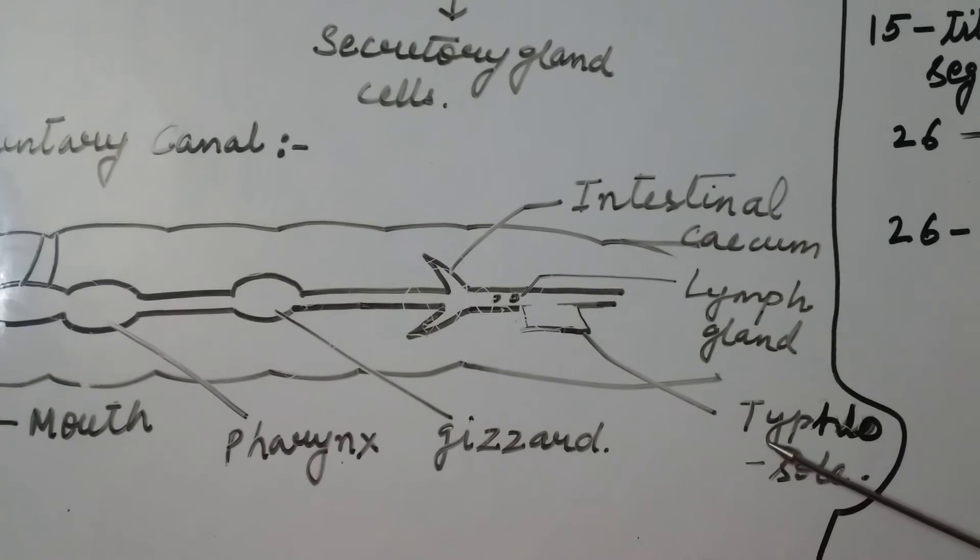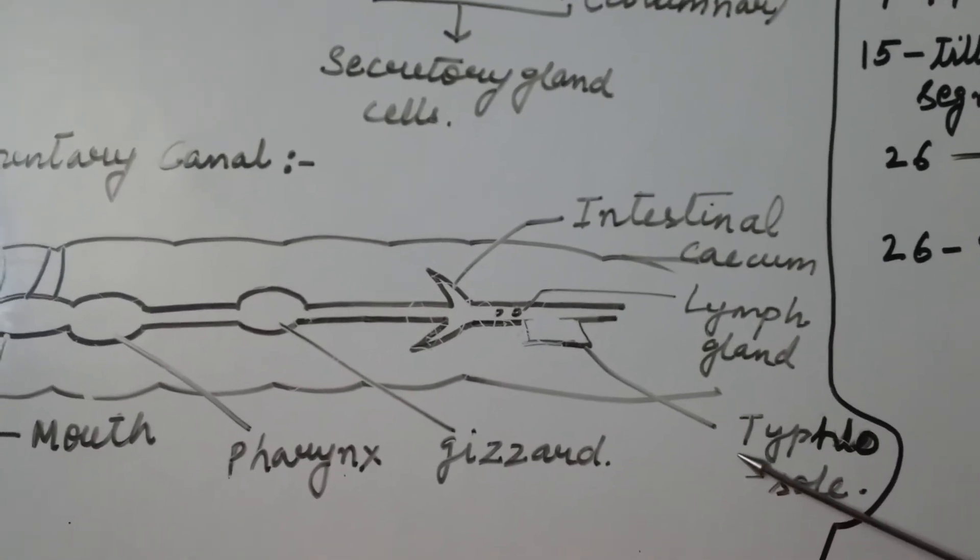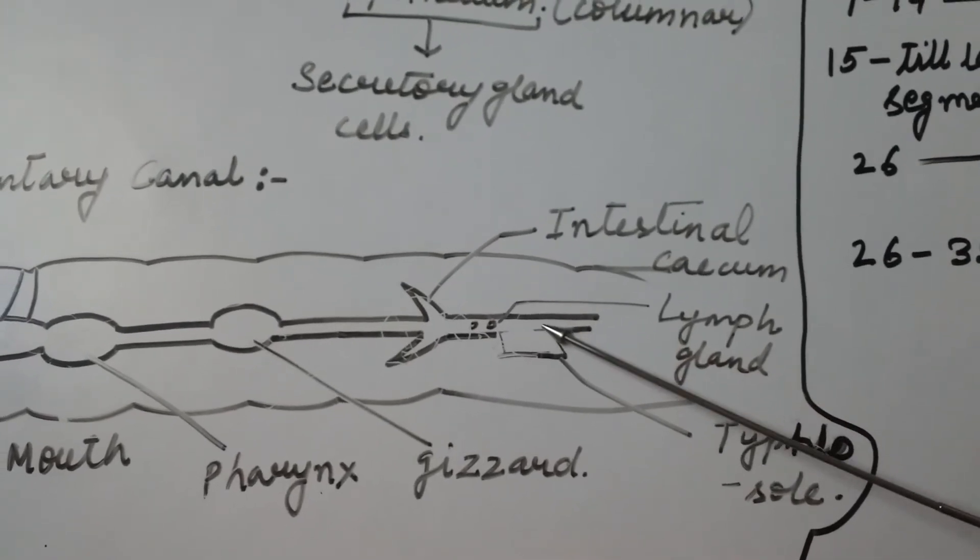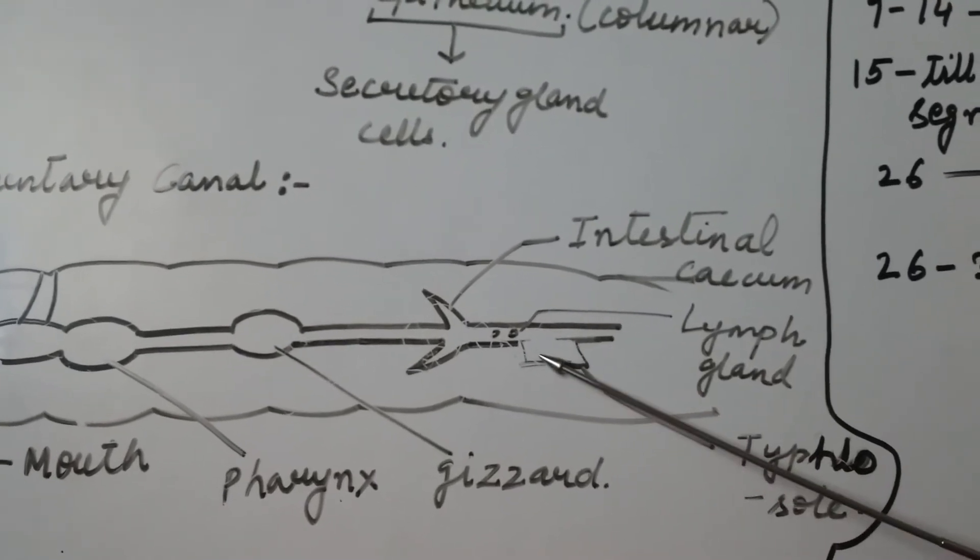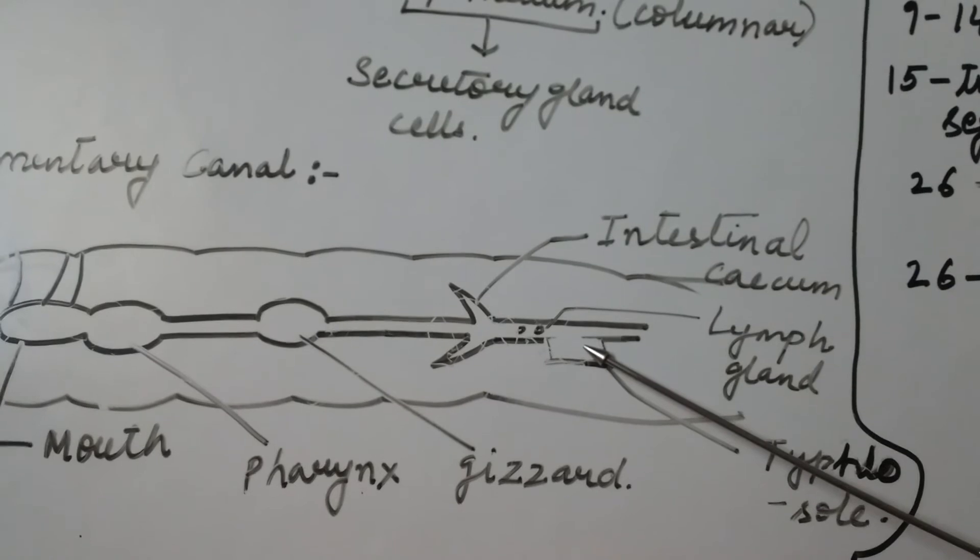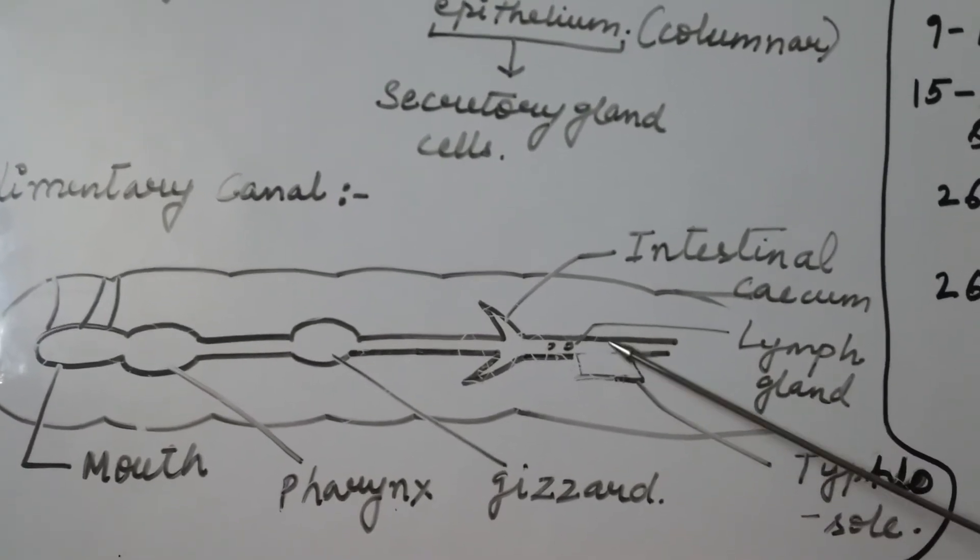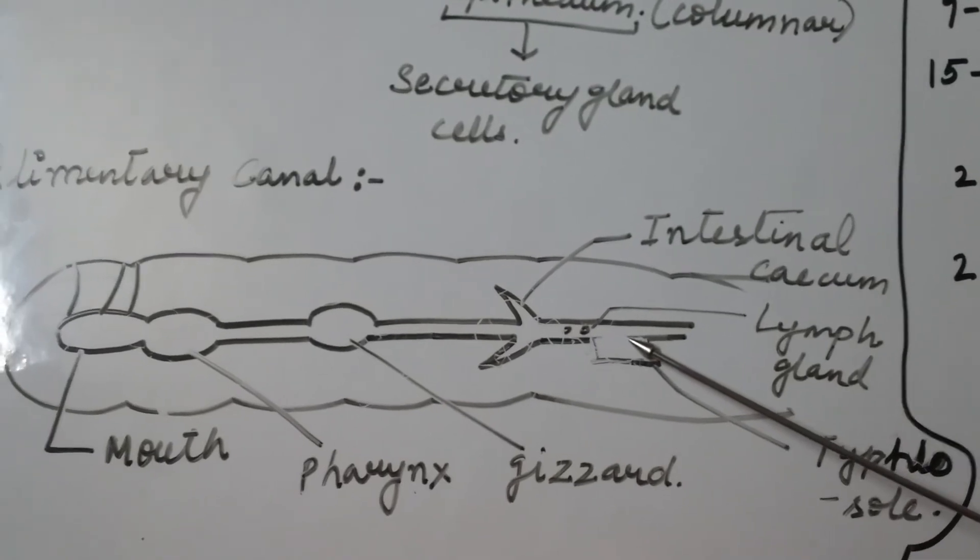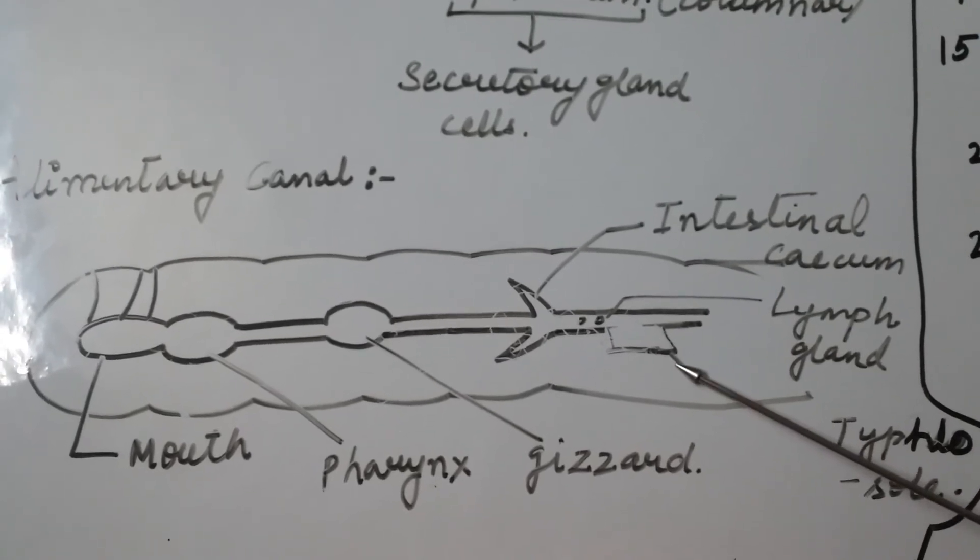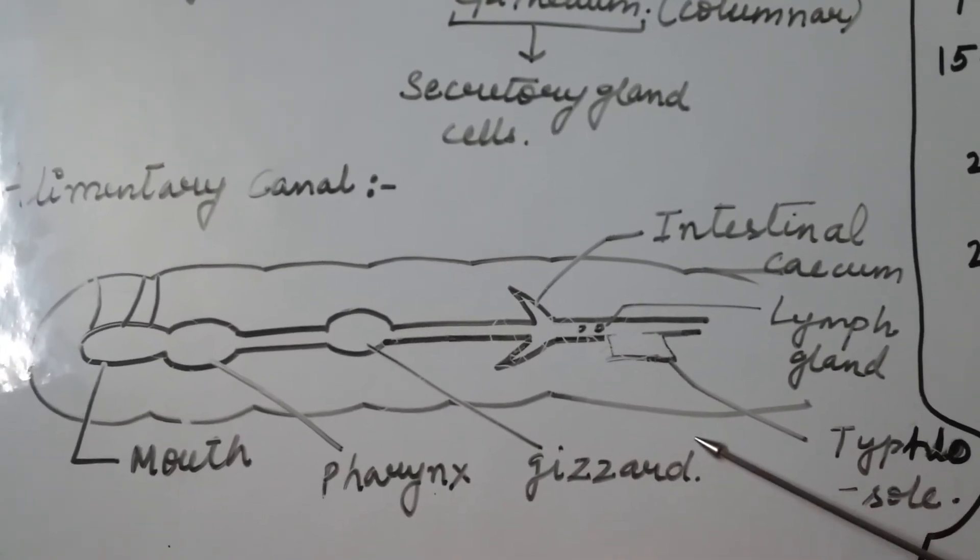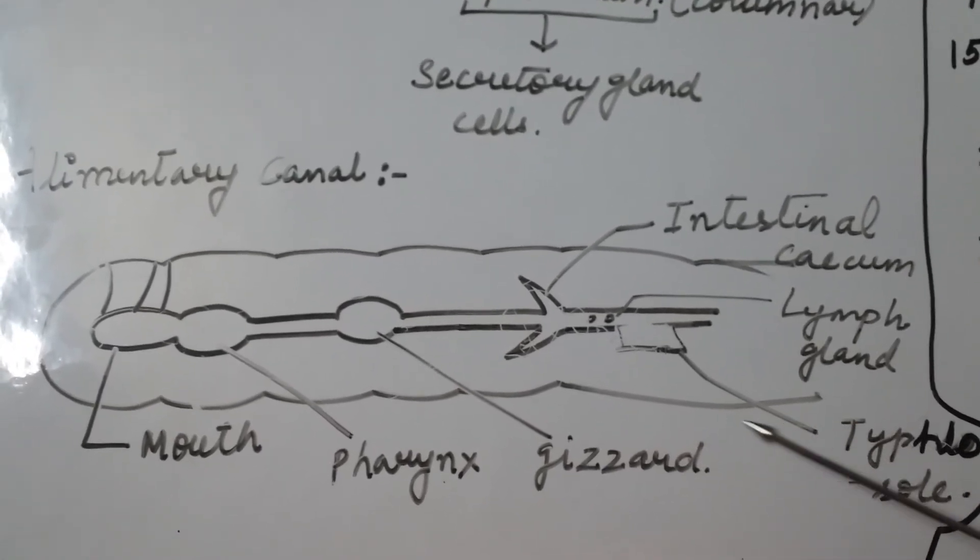After that, the digested food is absorbed at the fold that are present at the Typhlosole. It is a flap-like structure and after the absorption, the digested food particles are excreted out with the help of nephridium pores that are present on the lateral side of the body.